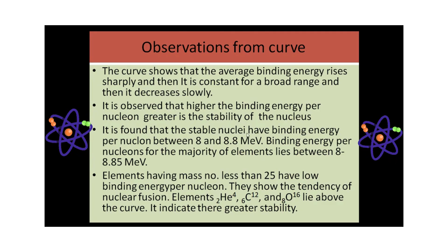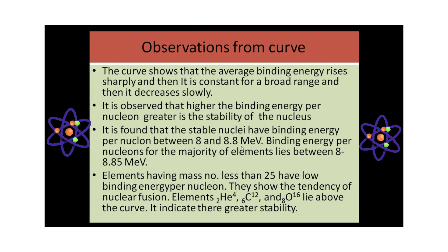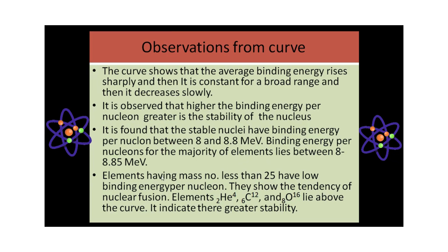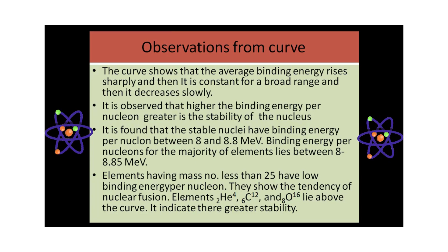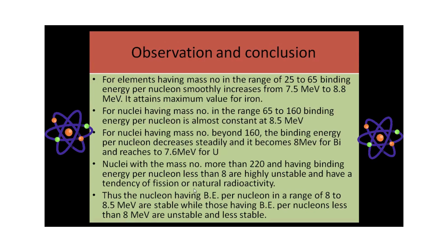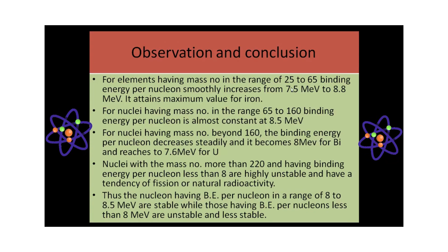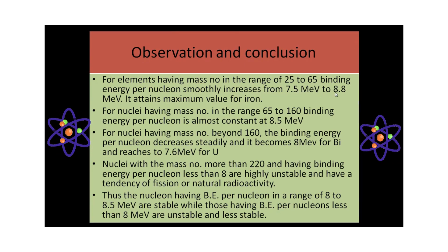We found that stable nuclei have binding energy per nucleon between 8 to 8.8 millielectron volts. The majority of elements have binding energy between 8 to 8.5 electron volts. For elements having mass number less than 25, there is low binding energy per nucleon and they show a tendency toward nuclear fusion, meaning they are not stable. For elements in the mass number range of 25 to 65, binding energy per nucleon increases from 7.5 to 8.8, attaining a maximum value for iron.